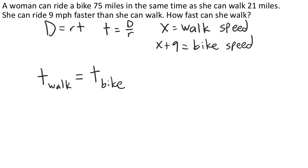For the walk, her distance was 21 miles, that's what we were told, and her rate is x, that's what we defined her walking speed to be. That's going to be equal to her distance for the bike was 75 miles, and her bike speed was the x plus 9, 9 miles per hour faster than she can walk.